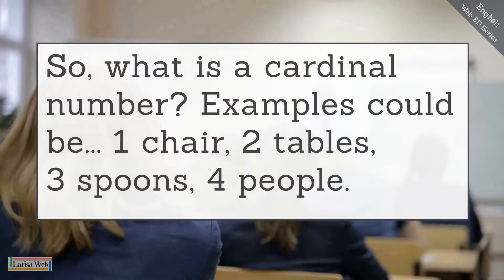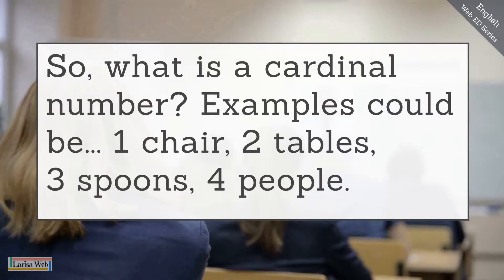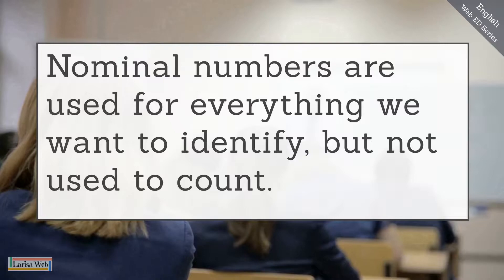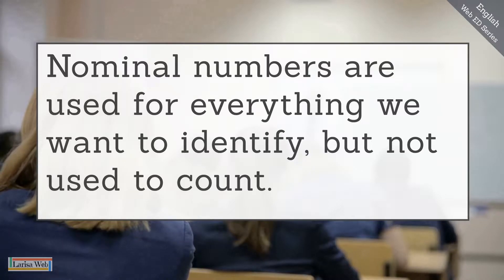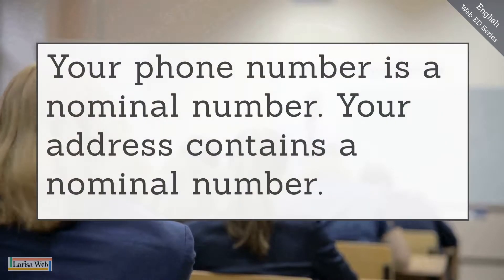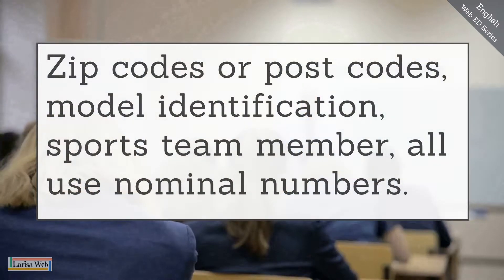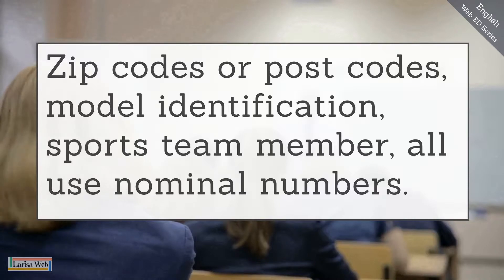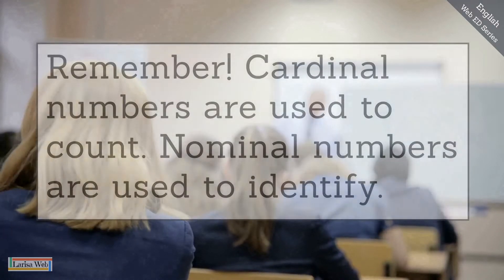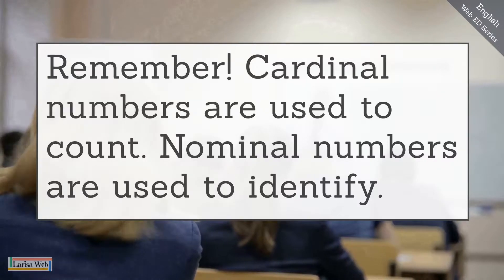So what is a cardinal number? Examples could be one chair, two tables, three spoons, four people. Nominal numbers are used for everything we want to identify but not used to count. Your phone number is a nominal number. Your address contains a nominal number. Zip codes or postcodes, model identification, sports team member numbers — all use nominal numbers. Remember: cardinal numbers are used to count; nominal numbers are used to identify.